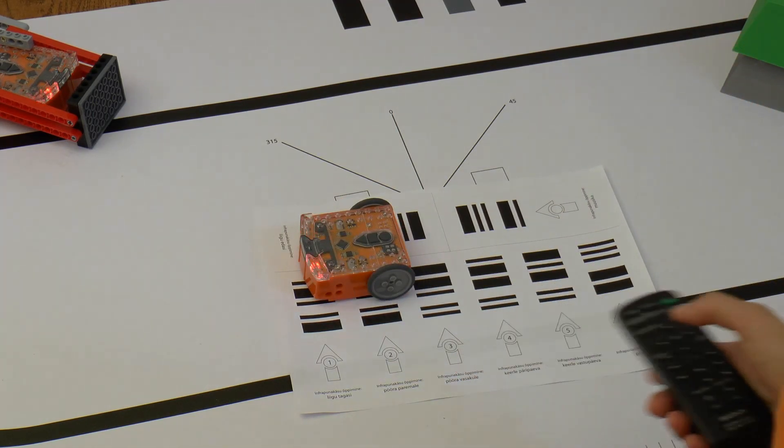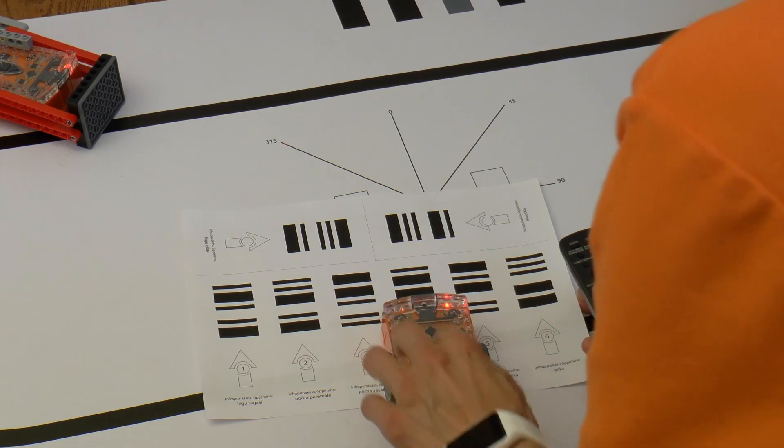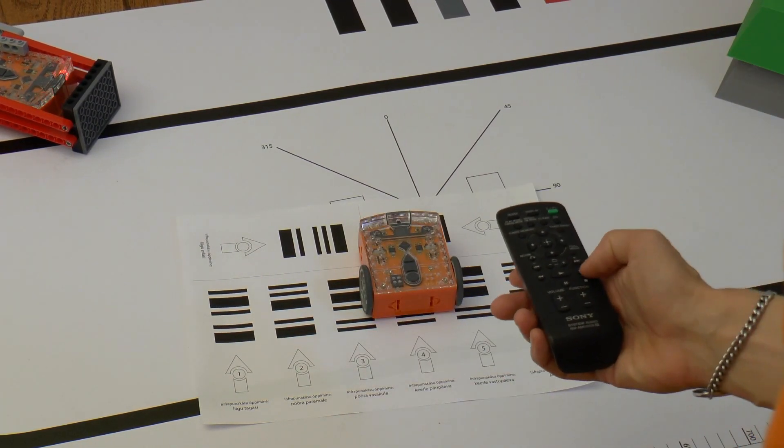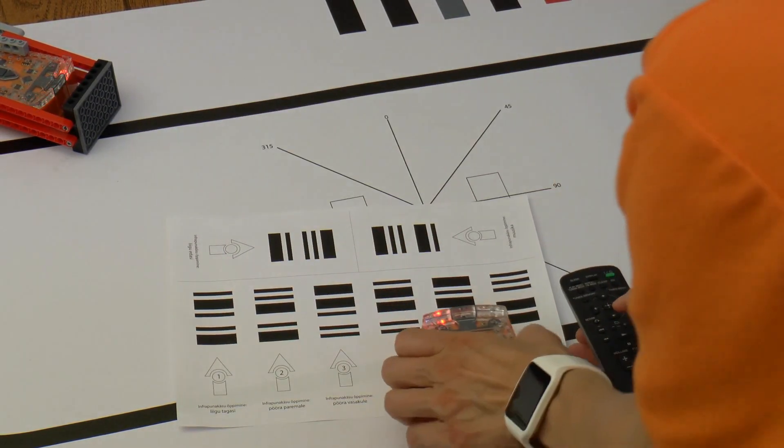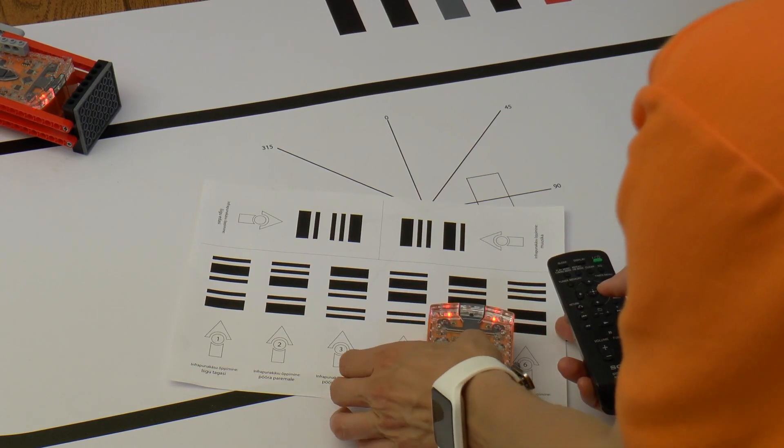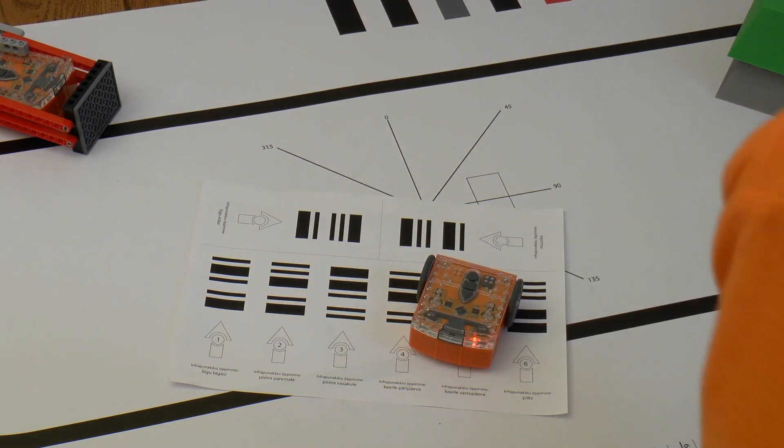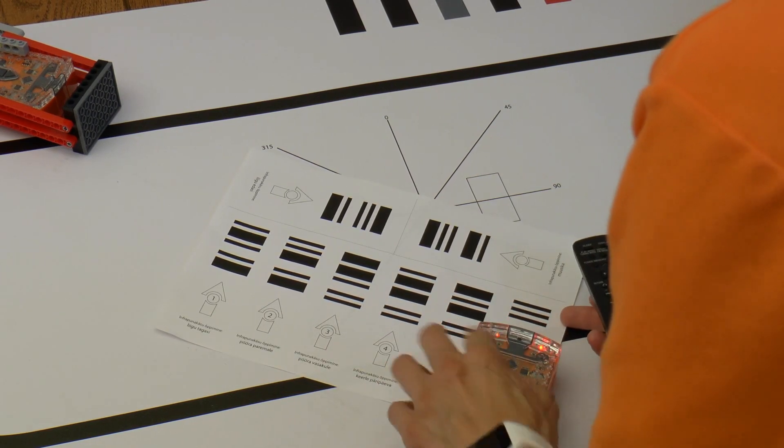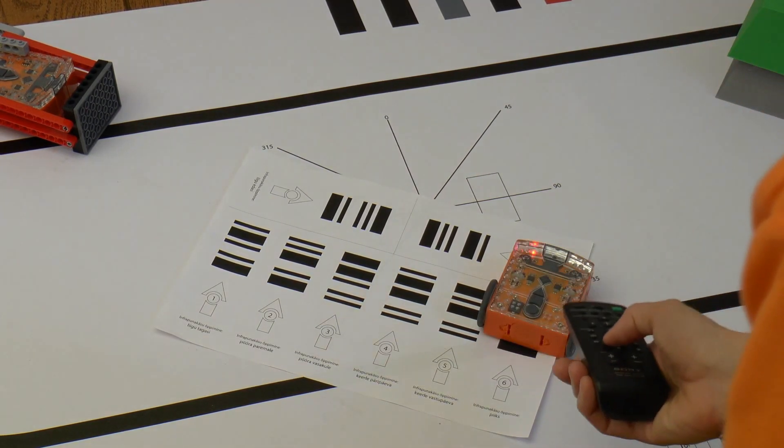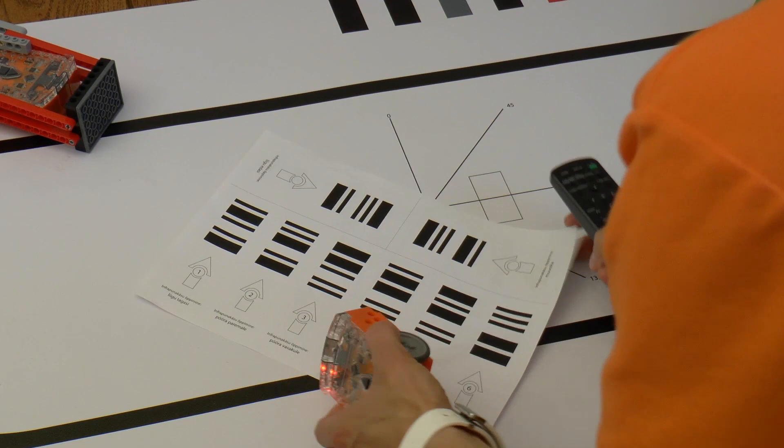I'll drive over the code spin right and press the remote button fast forward. I'll drive over the code spin left and press the remote button rewind. I'll drive over the code make a beep and press the remote button play. I'll drive over the code play music and press the remote button pause.